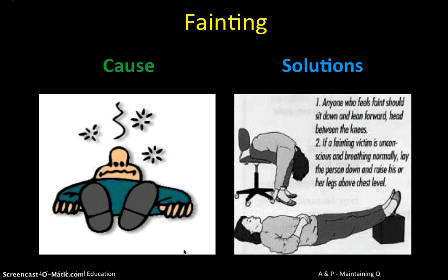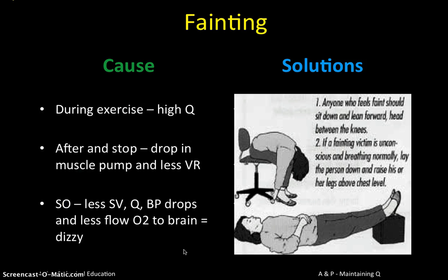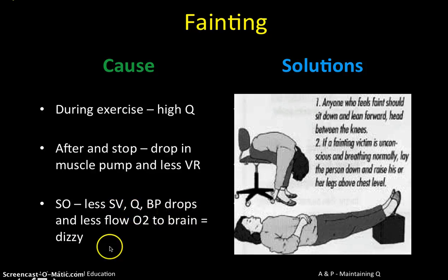Fainting can also result from poor venous return. If blood pools and isn't returning to the heart, less blood can be pumped out. A typical example is the soldier on parade who has stood still for hours with no skeletal muscle pump working — blood pools in their boots, less blood circulates, and they feel very dizzy and can faint. This can also occur at the end of an intense event if you don't cool down: stopping suddenly means the muscle pump stops, venous return becomes very poor, stroke volume and cardiac output drop, blood pressure falls, and less oxygen reaches the brain.